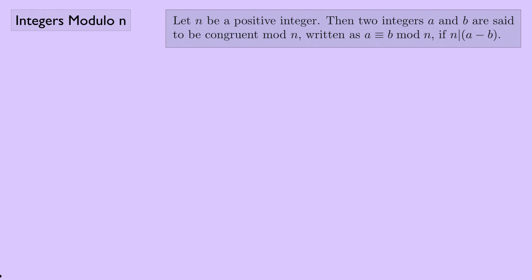Recall the notion of congruence modulo n. Let n be a positive integer. Then two integers a and b are said to be congruent mod n, written a ≡ b (mod n), if n divides a minus b.